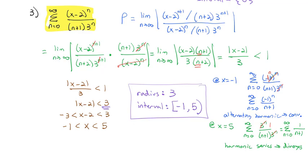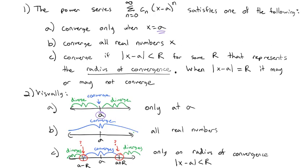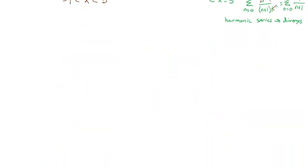So that's how we decide if a power series converges: use the ratio test, and find out whether it converges only at the center, for all real numbers, or within some radius of convergence. We can figure out what that radius is and exactly what interval works for x. But why are power series important? Power series are important because quite often we can represent functions as power series, and usually the power series is easier to do calculus with than the original function.